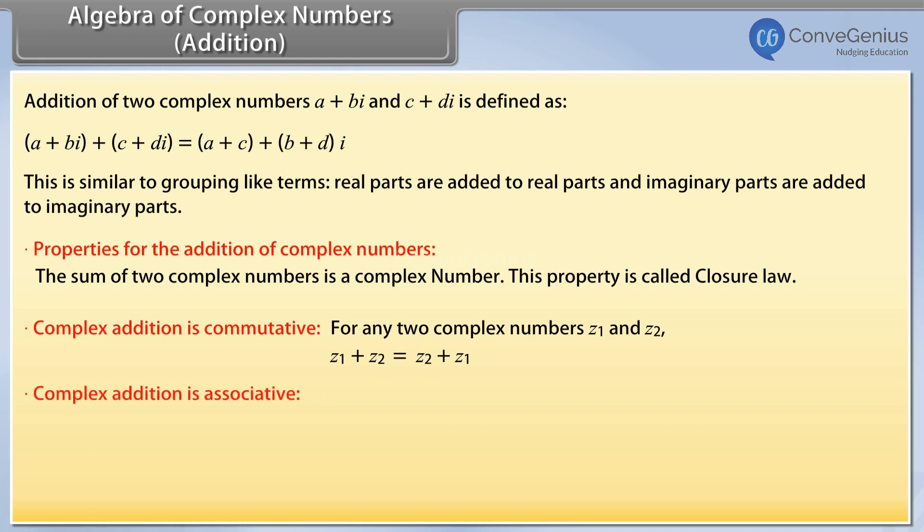Complex addition is associative. For any three complex numbers z1, z2, z3, z1 plus z2 plus z3 is equal to z1 plus z2 plus z3.